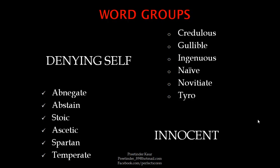The words which come under the word group of innocent are credulous, gullible, ingenuous, naive, novitiate, and tiro. Remember, novitiate and tiro can also be used for someone who is a beginner, as well as for someone who is very innocent.